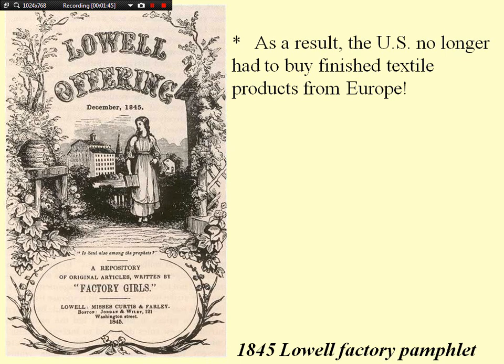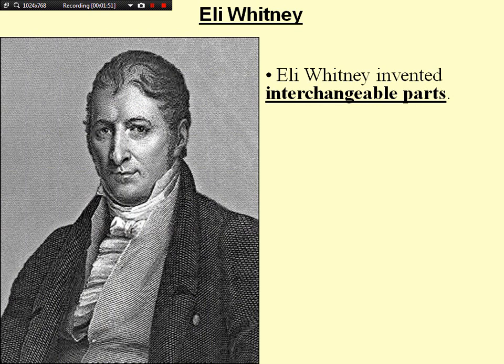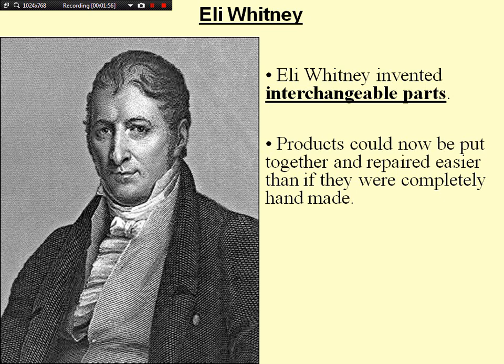Eli Whitney invented interchangeable parts, so products could now be put together and repaired easier than if they were completely handmade. For example, if you were building a gun, instead of hand-making every single gun — which takes a lot of time and requires skilled workers — you would use interchangeable parts, mass-produced. If something went wrong with your gun, you could get a part to fix it. Like today with an automobile — new tires or brake pads — those are interchangeable parts.